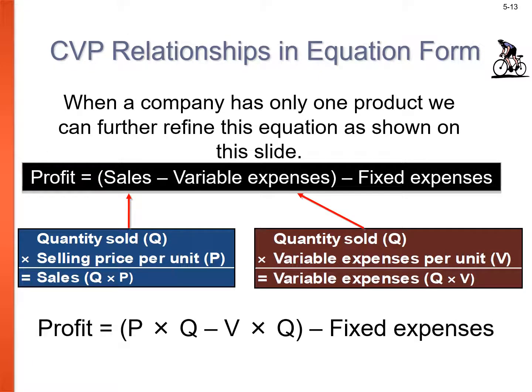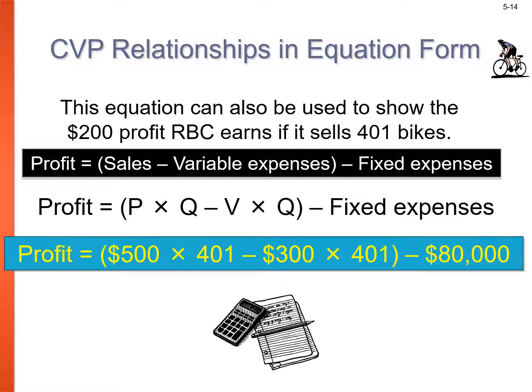When a company has only one product, we can refine the equation: quantity sold times sale price is sales (Q × P), and quantity sold times variable cost equals variable expenses (Q × V). So profit equals P×Q minus V×Q minus fixed expenses. Filling in the dollar amounts proves this equation works.